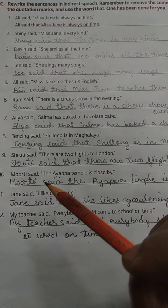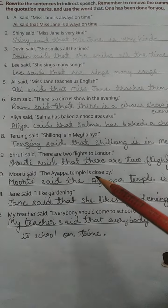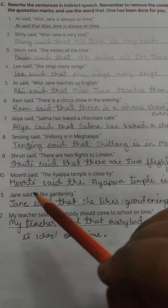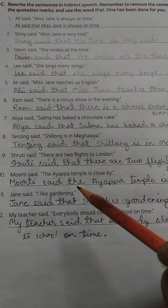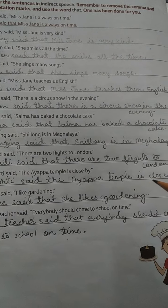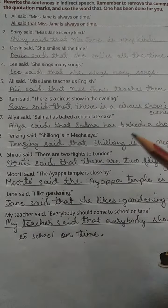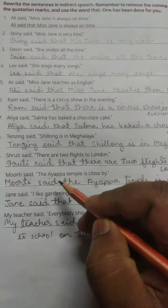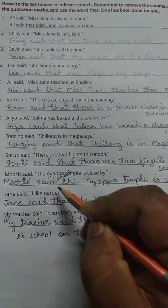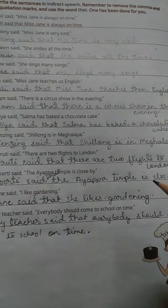Number 10. Murti said, comma, inverted commas open, the Ayyappa temple is closed by, full stop, inverted comma closed. Answer: Murti said that — I have not written 'that' there, yaha pe 'that' likhna hai — Murti said that the Ayyappa temple is closed by, full stop.